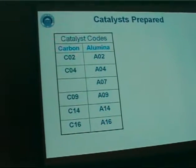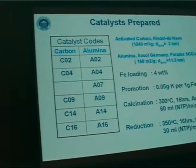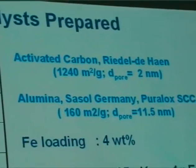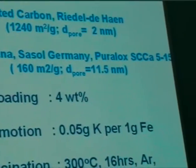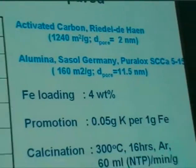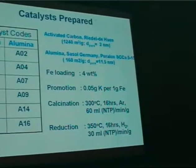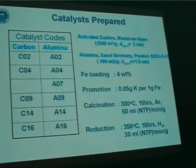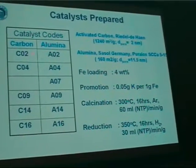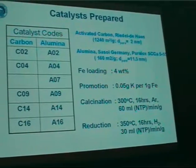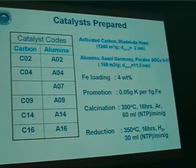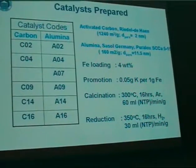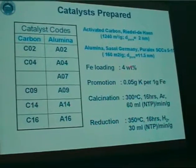The catalysts we prepare use two support materials: one carbon support and one alumina support. The carbon support is a high surface area carbon support with average pore sizes of around 2 nanometers. We use a Sasol Germany alumina support with 160 square meters per gram surface area and average pore size between 11 and 12 nanometers. The catalyst codes: C stands for carbon, A for alumina, and the number indicates the anticipated crystallite size. The iron loading was around 4 weight percent.